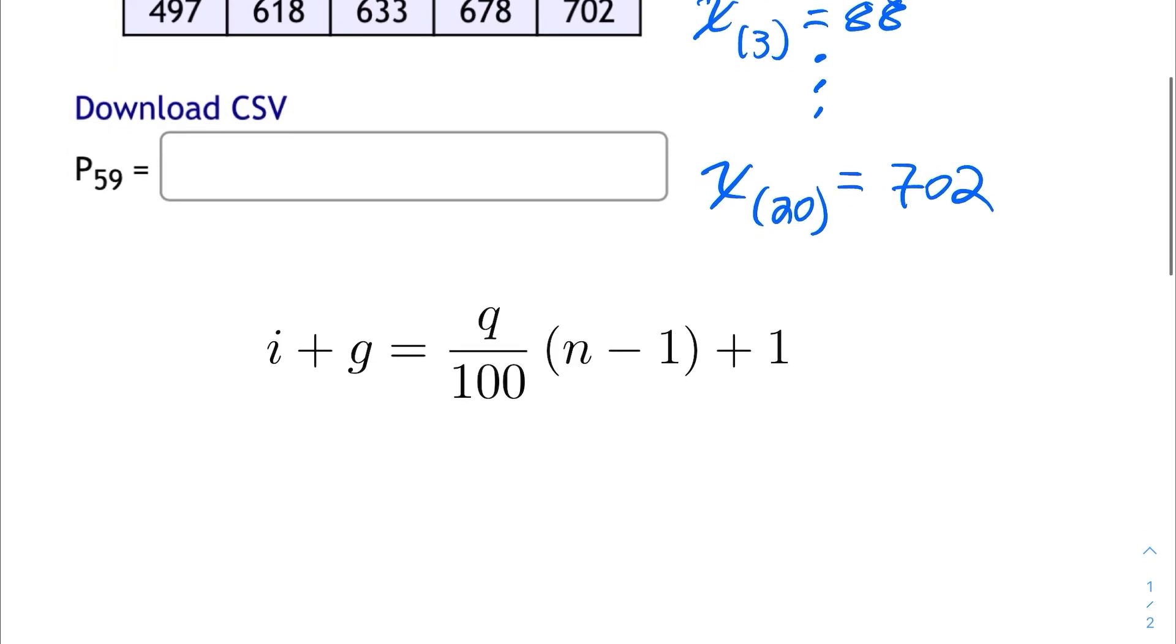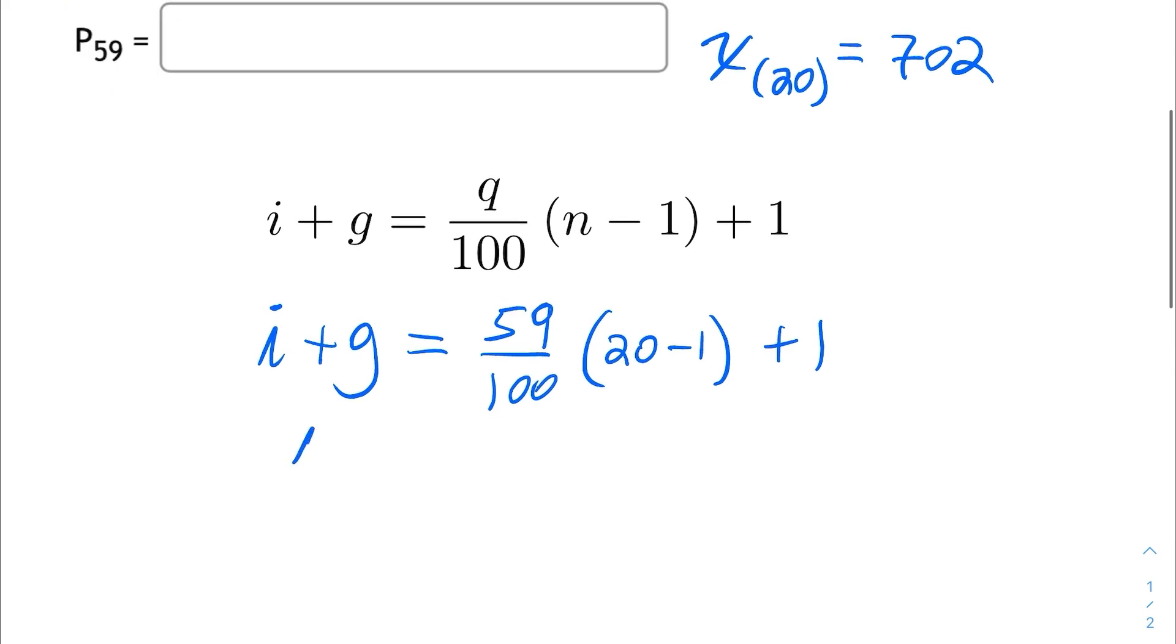We go ahead and we just plug all that in. We know that i plus g is equal to q, which is 59, over 100, times n, which is 20, minus 1, this whole thing plus 1, which gives me that i plus g is equal to 59 times 19 over 100 plus 1.